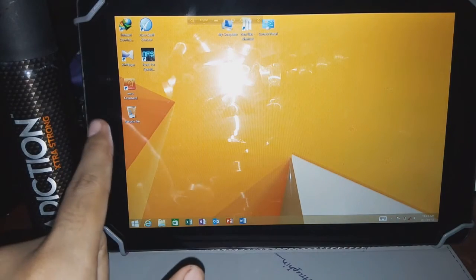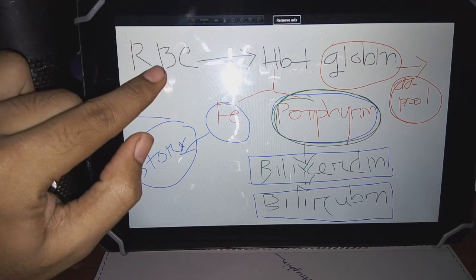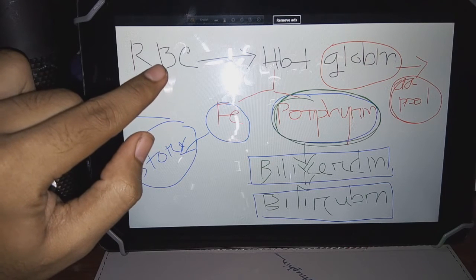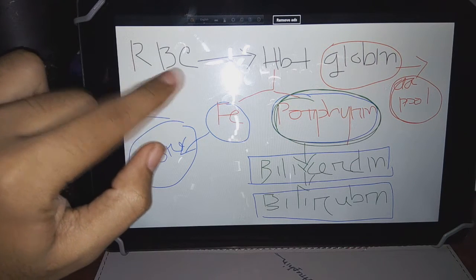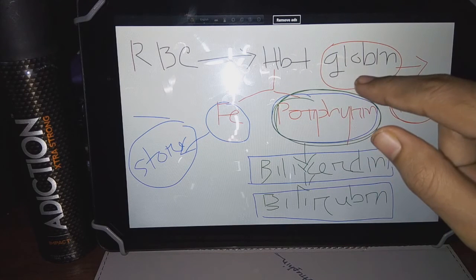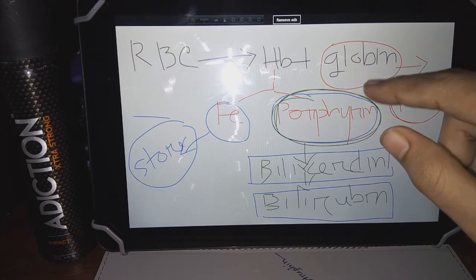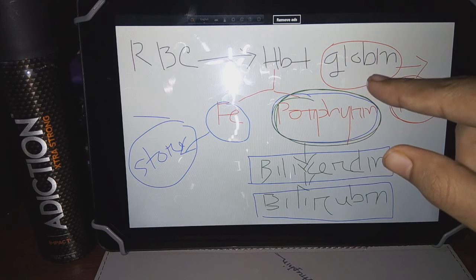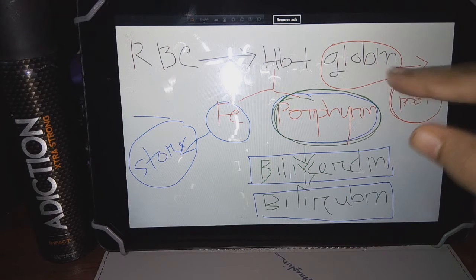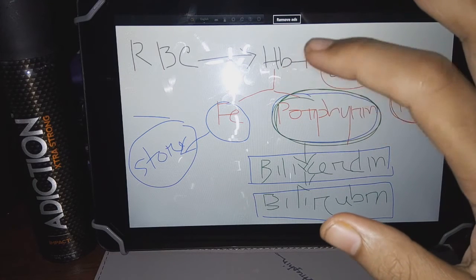Here we can see the RBC — this is a 120-day-old RBC. After 120 days, this RBC is engulfed by the macrophage, and there the RBC is split into heme and globin. This globin is a globular protein — note: this is globin, not globulin. This globin, being a protein, will ultimately be metabolized into amino acids and go to the amino acid pool.